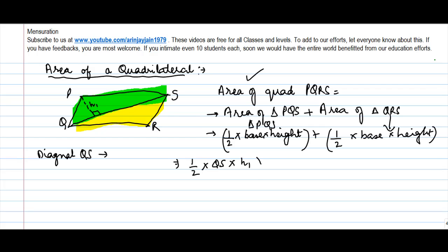So, into H1 plus half into base. Again, even for triangle QSR, let's say we also draw another perpendicular here and call this as H2. So, for triangle QSR, the base is again QS into H2.